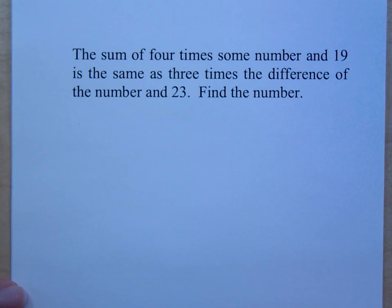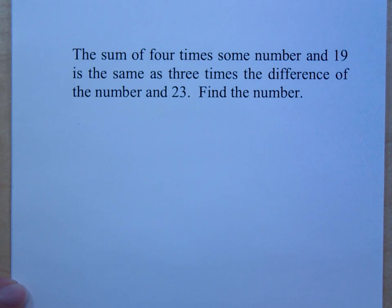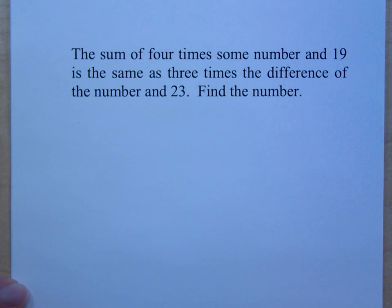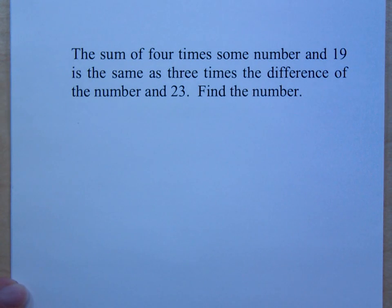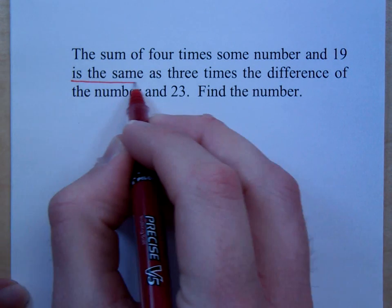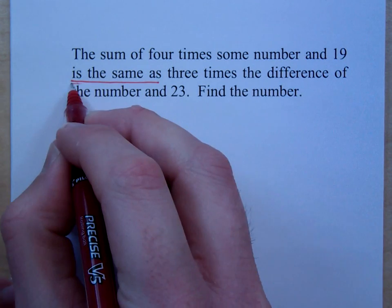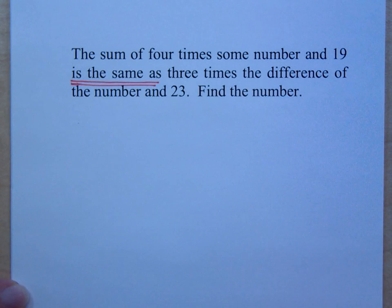We have the sum of 4 times some number and 19 is the same as 3 times the difference of the number and 23. That is a mouthful. Where's your equal sign? How can I split this problem up? Is the same as — is that the equal sign? Right, when you see 'is the same as,' that's your equal sign.